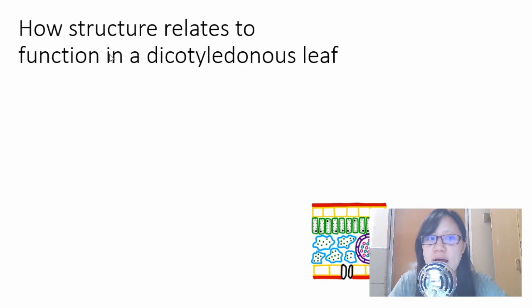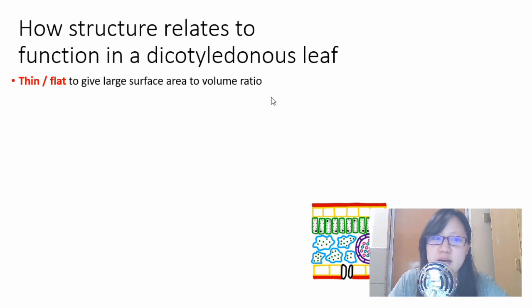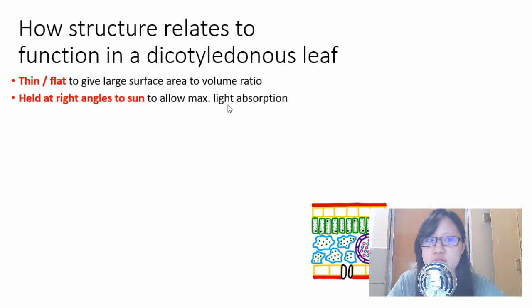When we look at how structure relates to function in a dicotyledonous leaf, this might be an essay question asked slightly differently, and you have to answer accordingly. For a dicot leaf, the idea is to talk about overall shape - thin and flat leaves to give large surface area to volume ratio. They're also held at right angles to the sun, meaning facing the sun, to allow maximum light absorption.